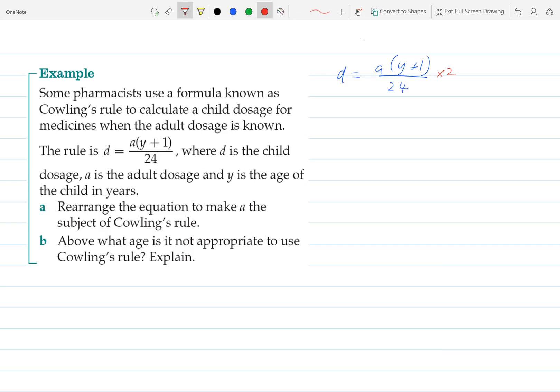We'll start by multiplying both sides by 24. So we get 24D, and they cancel out, and we're left with A times Y plus 1.